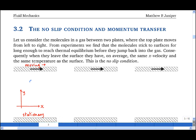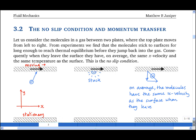Let's consider a molecule hitting the top plate. From experiments on fluids, we find that molecules stick long enough to surfaces for them to reach thermal equilibrium. Consequently, when they leave the surface, they have on average the same horizontal velocity as the surface. This is known as the no-slip condition, and it is a very good approximation for most fluids at most surfaces, except at the micro and nano scale.